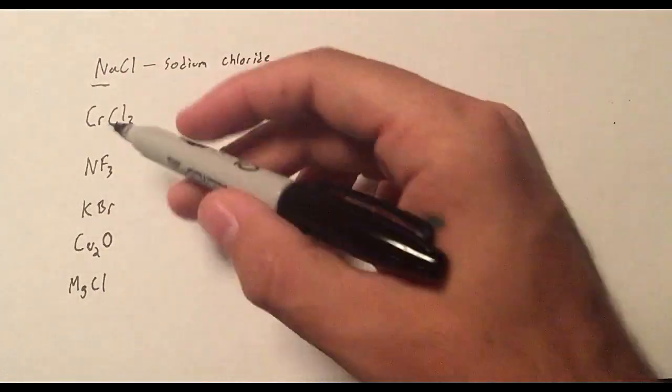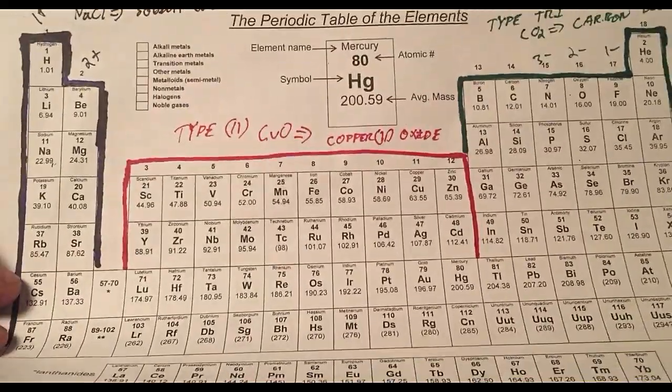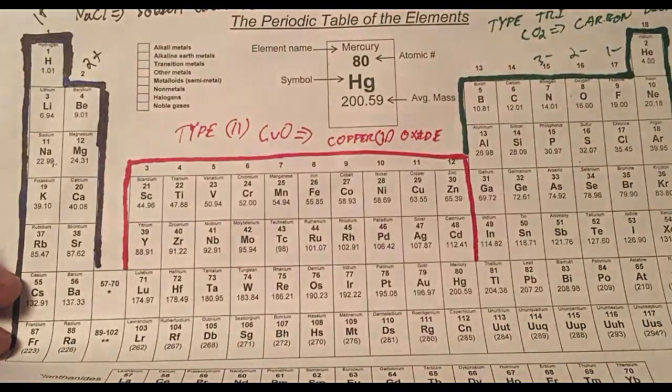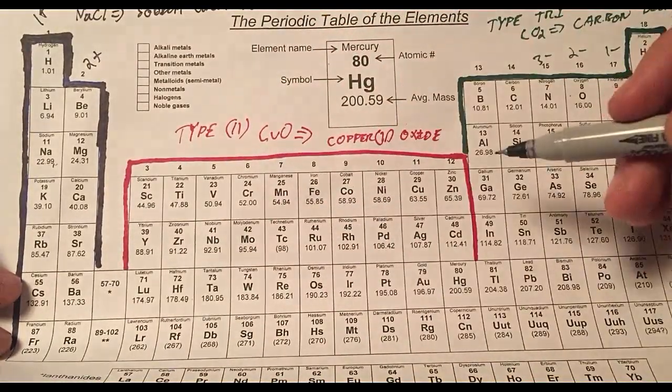Let's go ahead and do what we have is chromium chloride. Again, I look here, so I ask myself, what's the type? Is it in group one or two? Chromium. Nope. Is it over here in the transition?